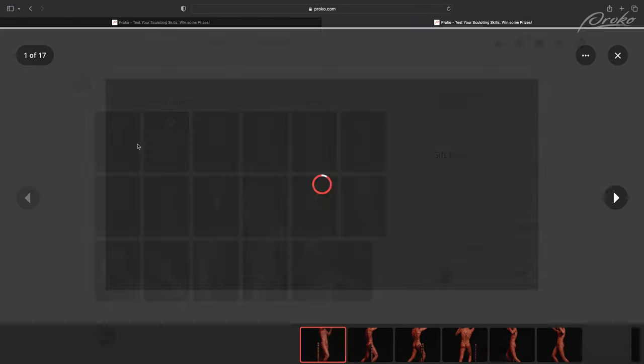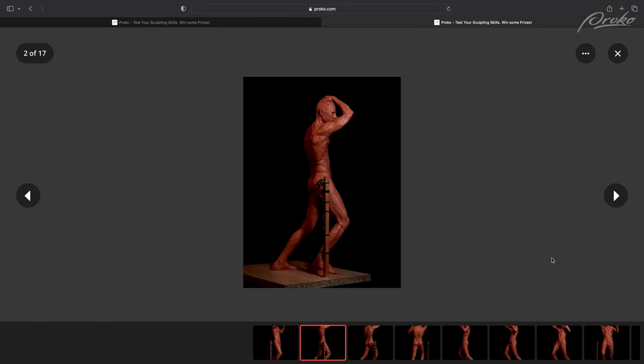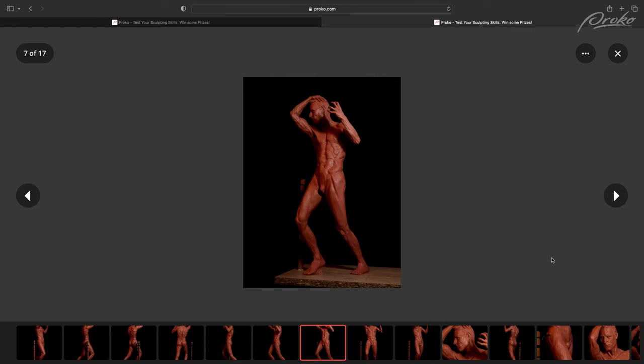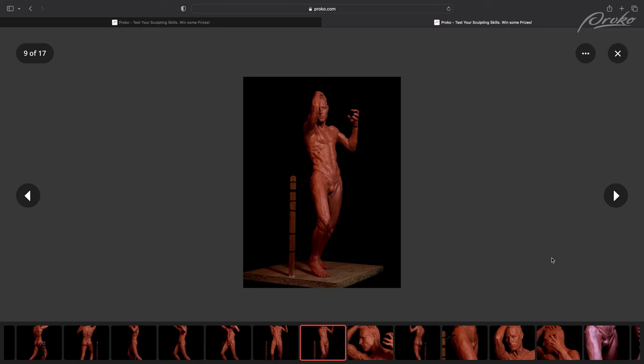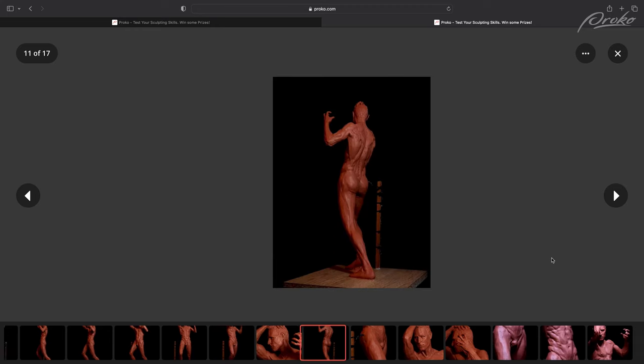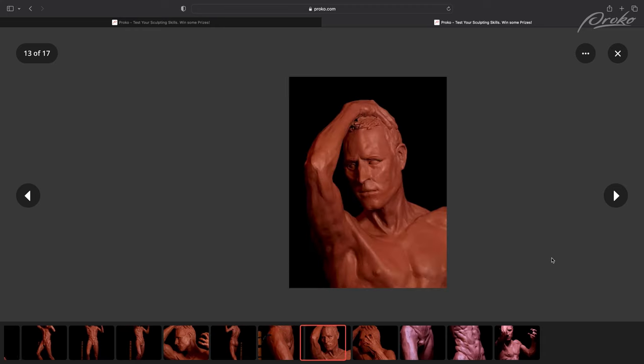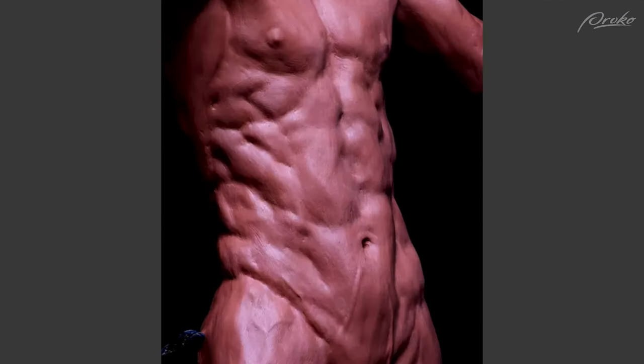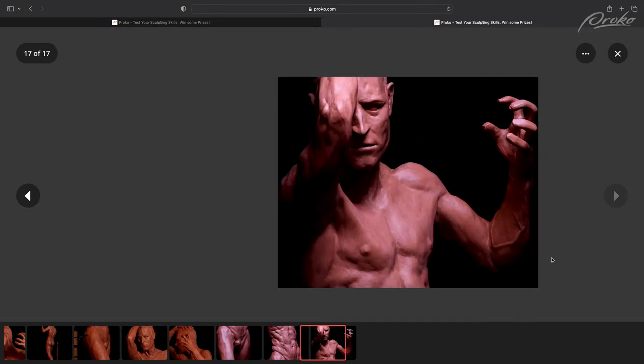All right, drum roll. For the number one spot and the winner of this first online sculpture competition, we have Jose A, the name that he has on his account. And this one, I just really liked it. I liked the details. This was the male figure. He did the sculpture of Ben. And I felt like the documentation turnarounds felt good. The gesture felt good. But there is one detail shot of the torso that I just thought was really impressive. The documentation looked really clean. And so I was like, you know what? That is deserving of the number one spot.